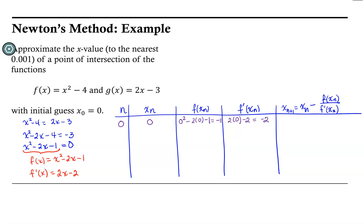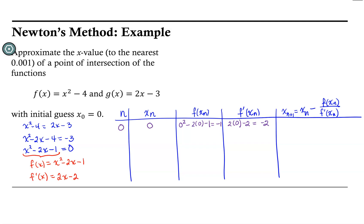And then our next approximation will be 0 minus our function value divided by the derivative's value. In this case, we get -1/2. Since we're asked to approximate the x-value to 0.01 accuracy, we'll record that in decimal form as -0.5. So our first approximation is -0.5.